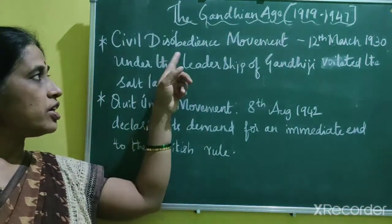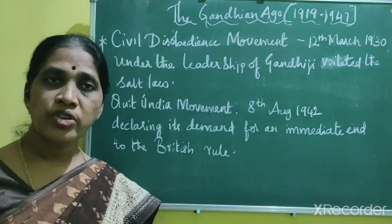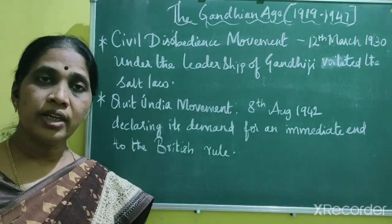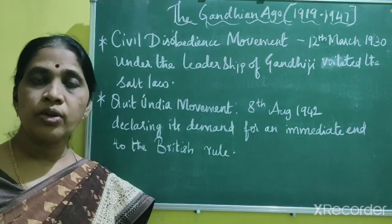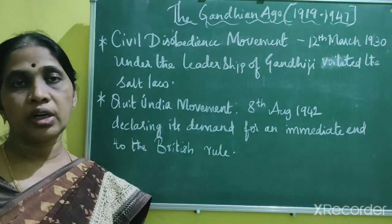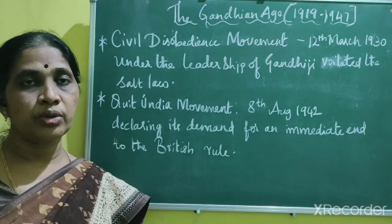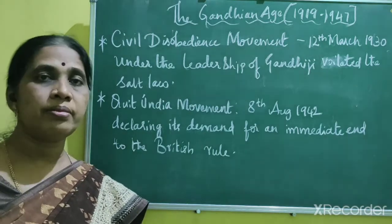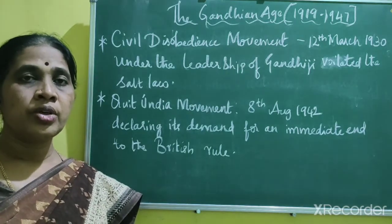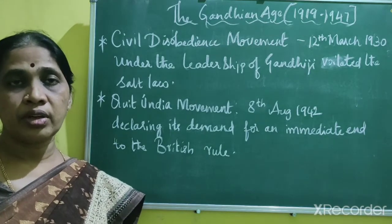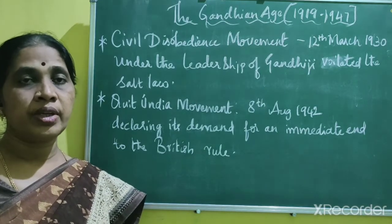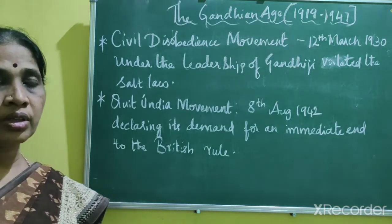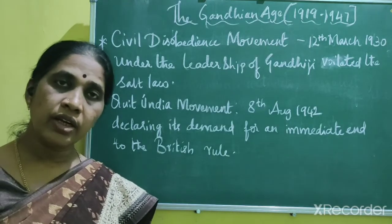We will now learn about the Civil Disobedience Movement, which was launched on 12th March 1930. In the year 1927, the Nehru Report had demanded autonomous status under British rule. It was rejected by the Muslim League because of the non-inclusion of their demands in the report. This led to a breakup between the Congress and the Muslim League, and the Nehru Report was ultimately rejected by the British government.